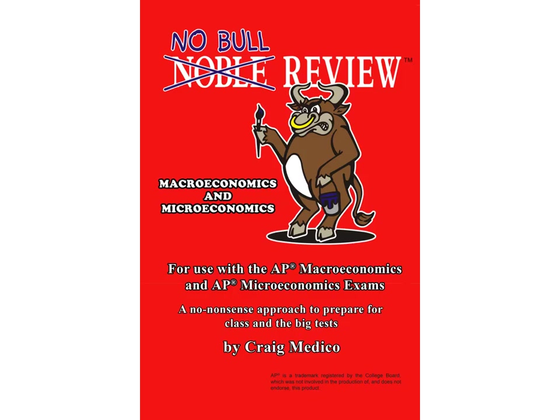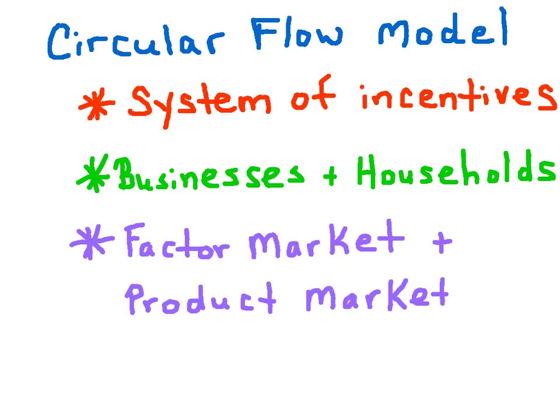Welcome to another Noble Review session for students of AP Economics. Last time we went over comparative advantage in trade. Today we're going to review the circular flow model. I told you last time that the circular flow model is the hottest model that you'll ever see in your life, because it incorporates just about everything that we do in this course. It's a system of incentives that shows how businesses and households respond to incentives through the factor market and product market.